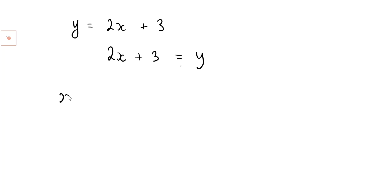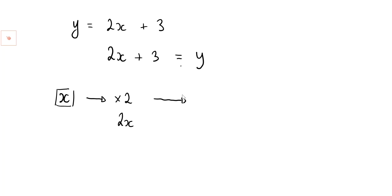This means: if I take any value for x, x represents any number. What do I do first? I multiply it by 2. I then take that result and add 3 to it, and I get an answer. That answer is called the y value.